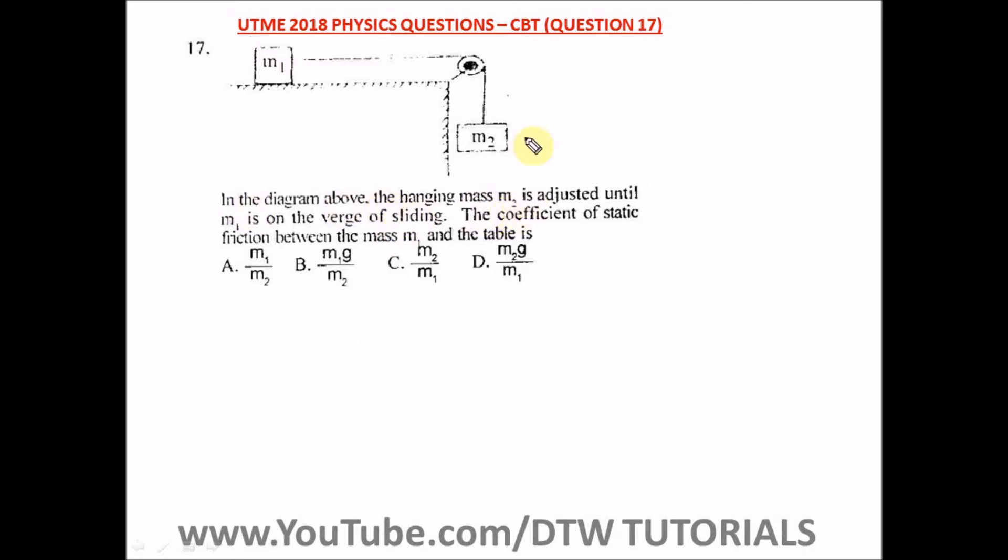the hanging mass M2 is adjusted until M1 is on the verge of sliding. The coefficient of static friction between M1 and the table is... so we're looking for the coefficient of static friction between M1 and the table.